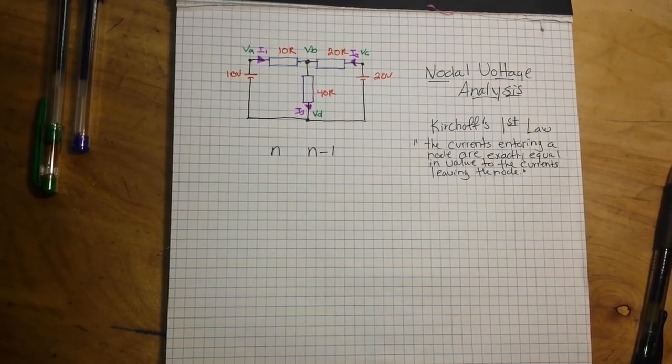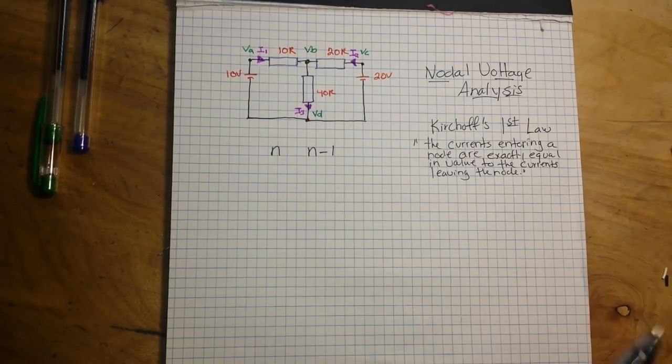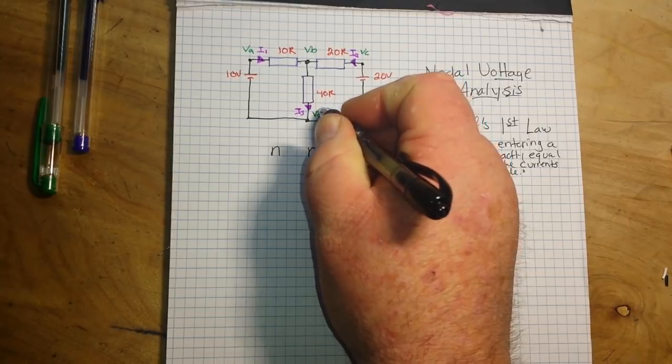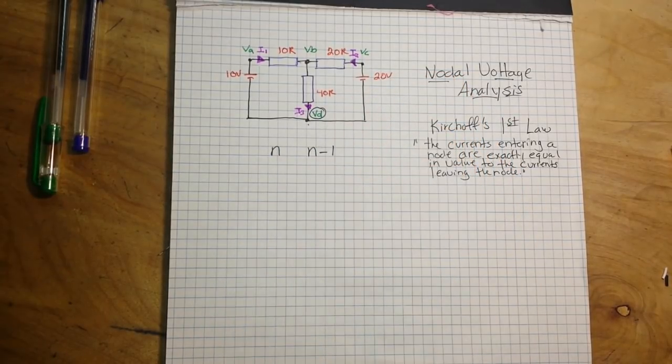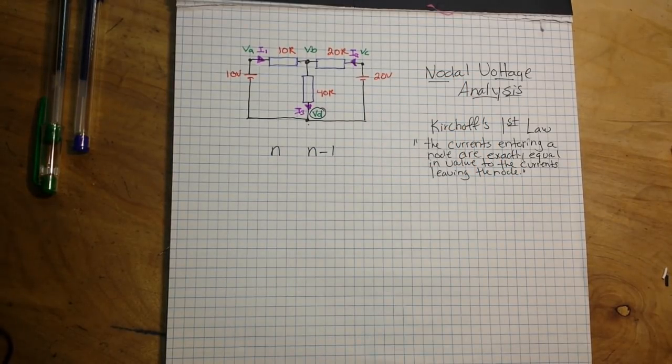Step two is to choose a reference node. All the other nodes revolve around our reference node. And in this case, our reference node is going to be here at node D.